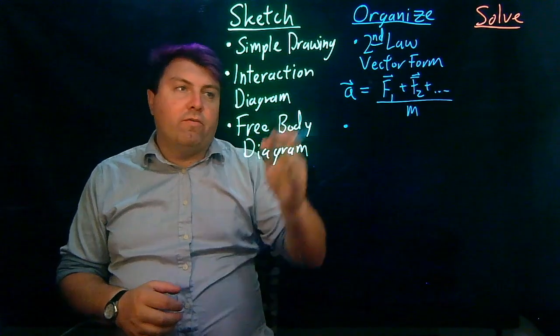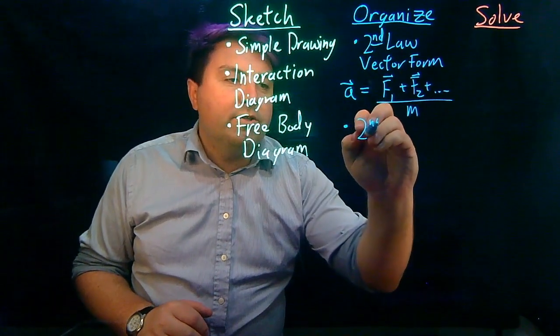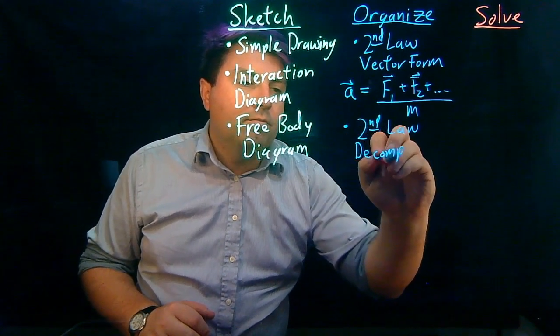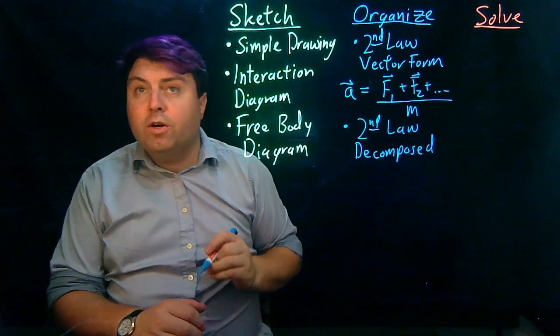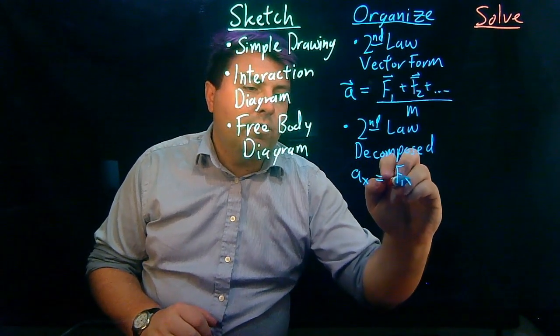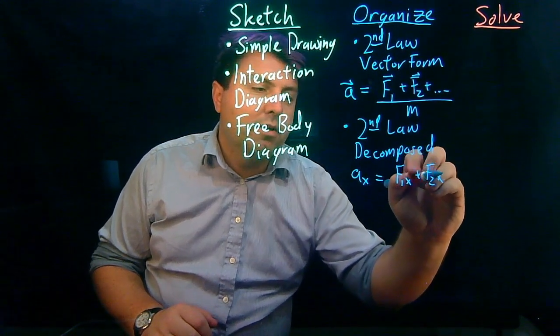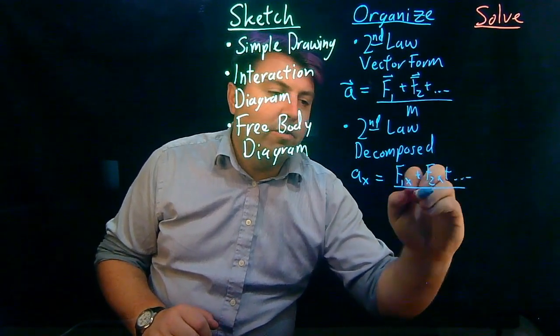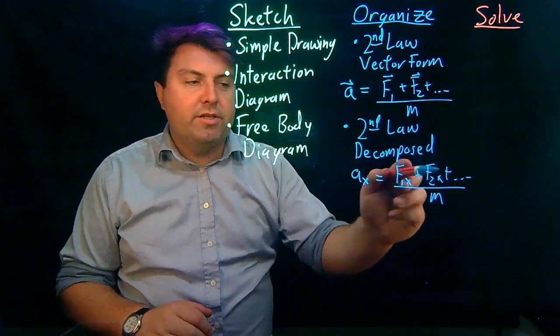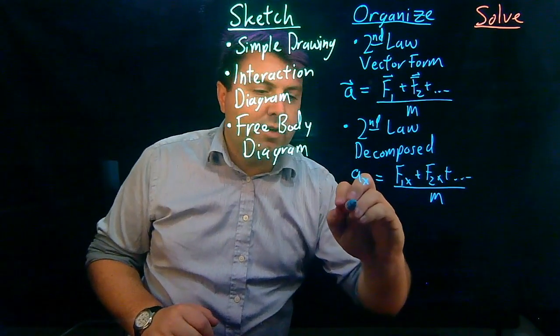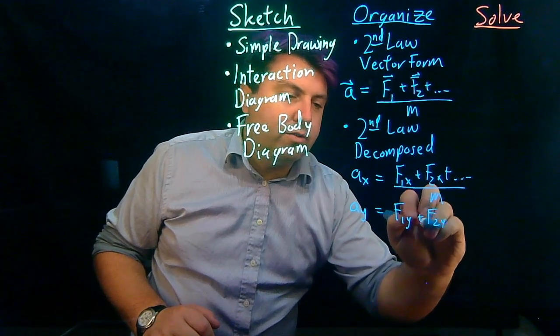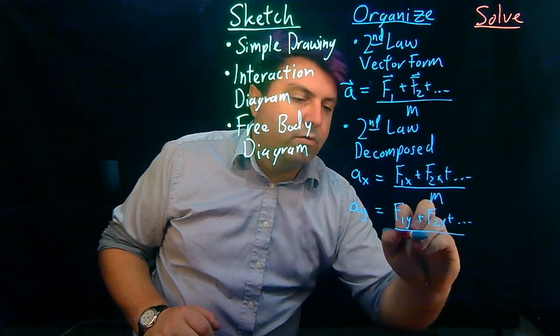After we have our forces all listed out, then we do our second law in decomposed form. So when it's decomposed, then we have that our acceleration in the X is force one in the X plus force two in the X and so on and so forth over the mass. So what we have to do is use the free body diagram and the second law to understand which of these are zero, which are positive, which are non-zero. And we have to do the same in Y as well. F1Y plus F2Y and so on over the mass.